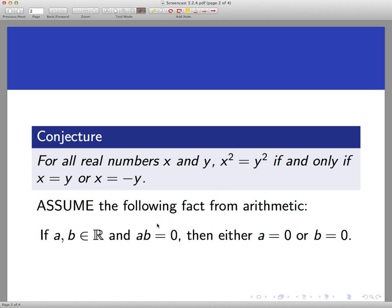We're going to assume a fact from arithmetic. This is actually an axiom from arithmetic that we accept, typically, without proof. If we take any two real numbers and multiply them together, and their product is zero, then either a equals zero or b equals zero. So we'll just call this our axiom, which is a fancy word for a statement that we accept without proof. Okay, so we're going to prove this.